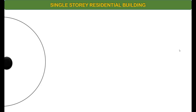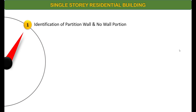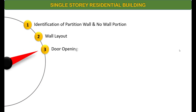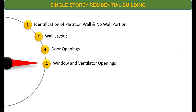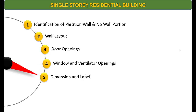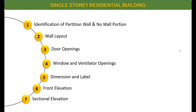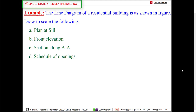This tutorial is divided into 7 steps. The first one deals with identification of partition wall and no-wall portions. The second step deals with wall layout, the third with door openings, fourth window and ventilator openings, fifth dimension and label, the sixth front elevation, and the seventh sectional elevation.